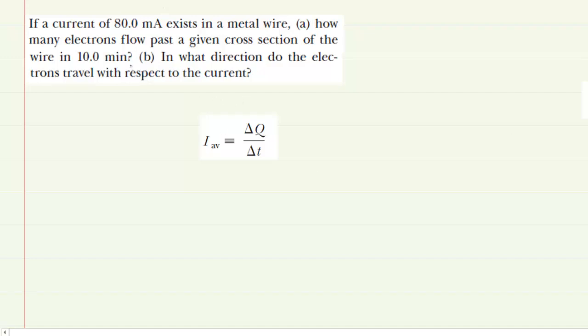In part A, we are asked to determine the number of electrons that flow past a given cross section of a wire. We're given two pieces of information: a time interval, which we would call delta T, and then a current, which we can call capital I.